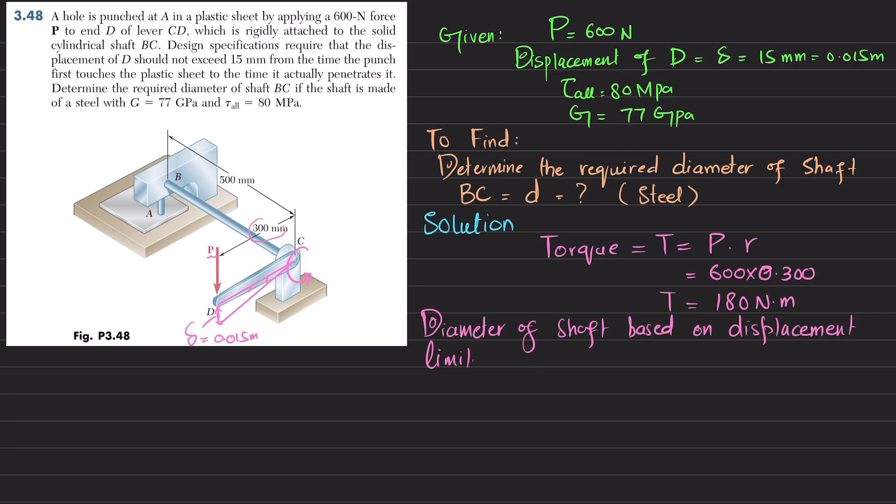You know this distance is 300 and you know this value, so we use the formula s equals r theta. But here delta equals r times theta, so from here theta equals delta over r. Delta is 0.015 divided by r, which is 0.300.